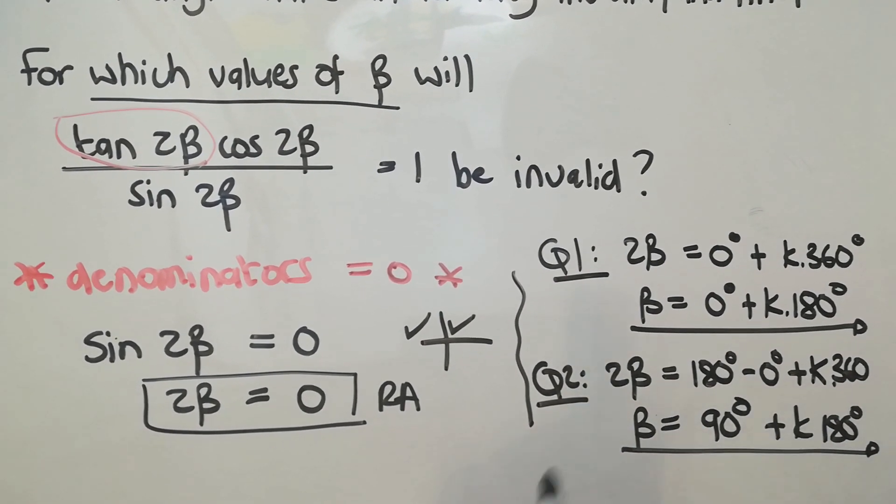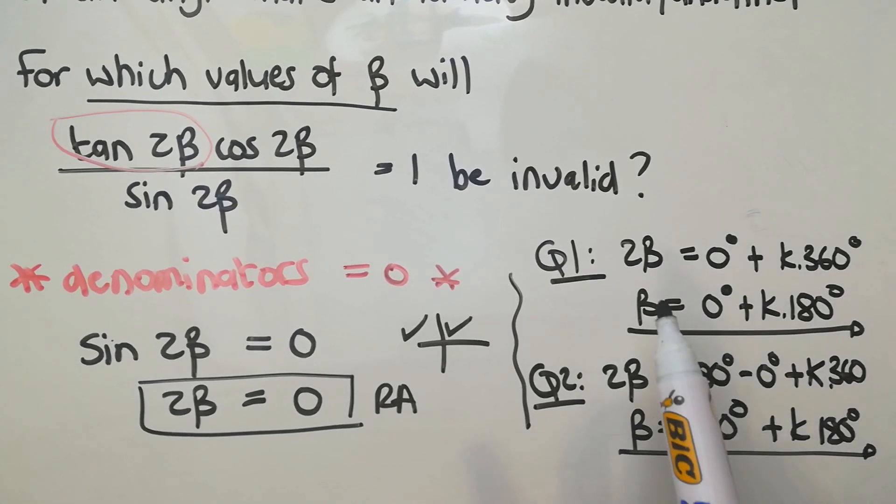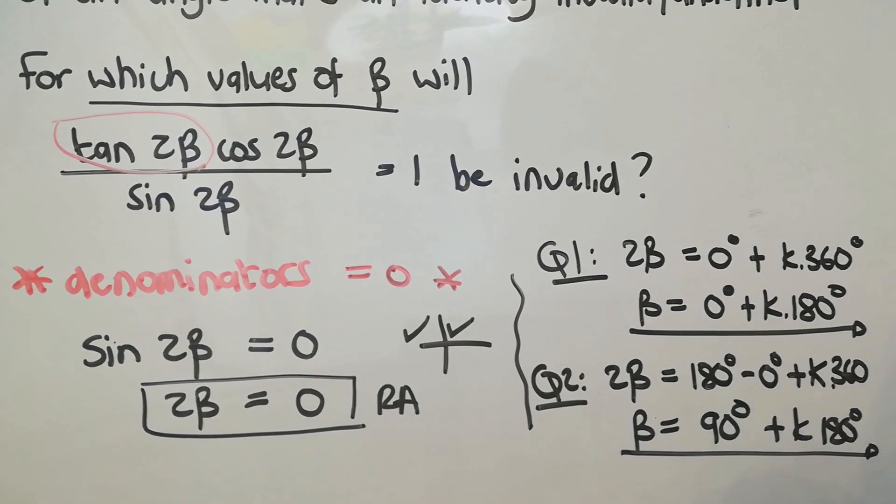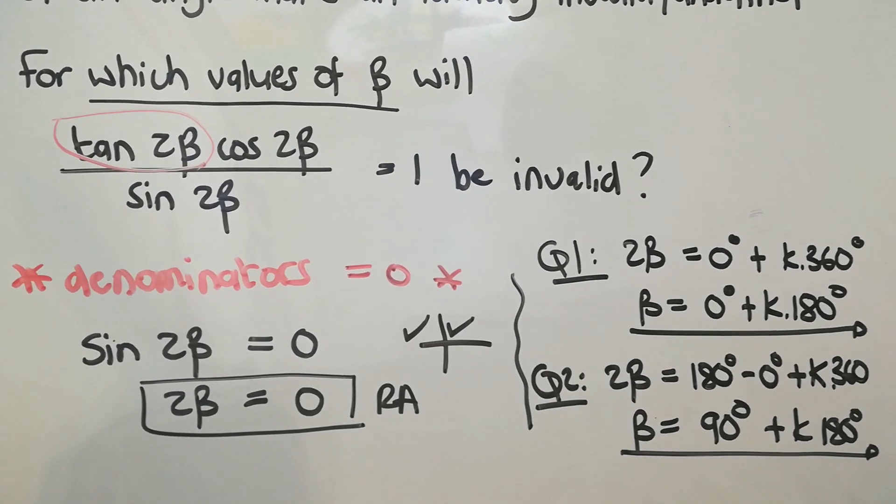So I finish off with three answers. The one that I worked out with the tan, this one and that one. And for all of those values of beta, this identity is not valid.